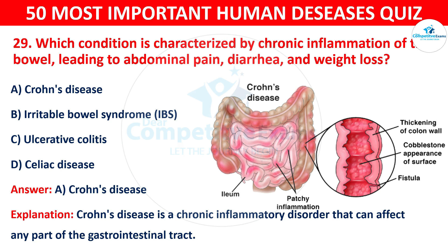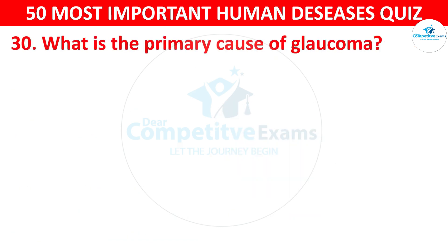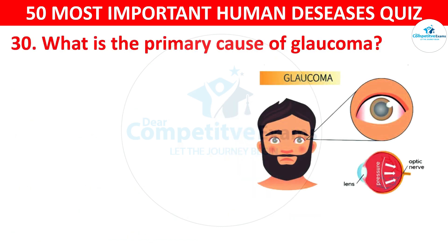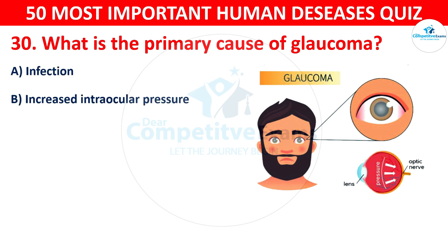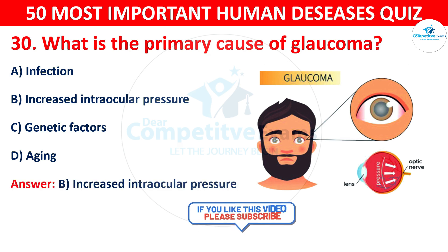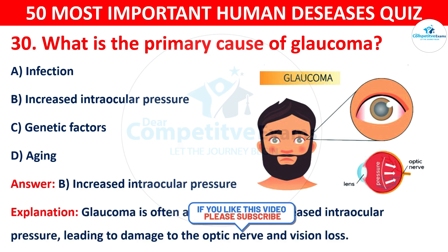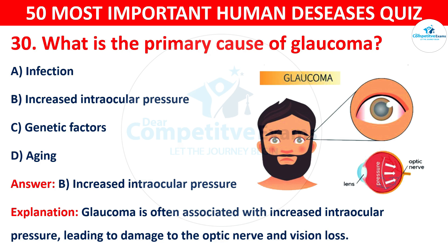Question 30: What is the primary cause of glaucoma? Your options are: A) Infection, B) Increased intraocular pressure, C) Genetic factors, or D) Aging. The correct answer is B — increased intraocular pressure. Glaucoma is often associated with increased intraocular pressure, leading to damage to the optic nerve and vision loss.